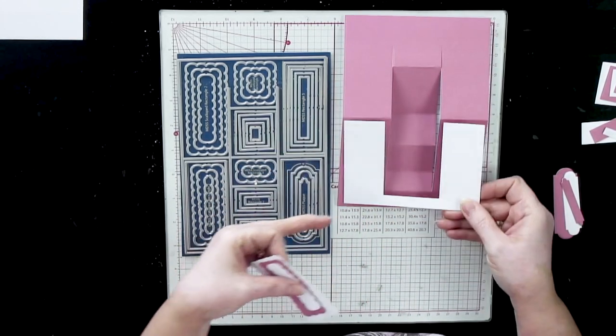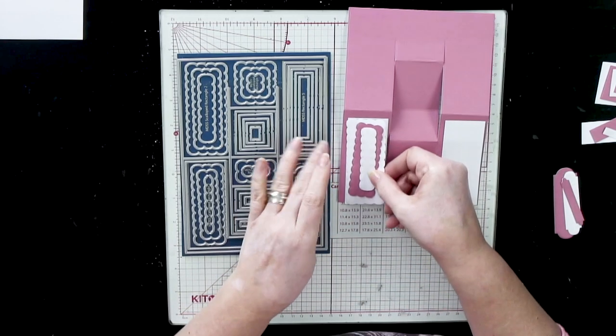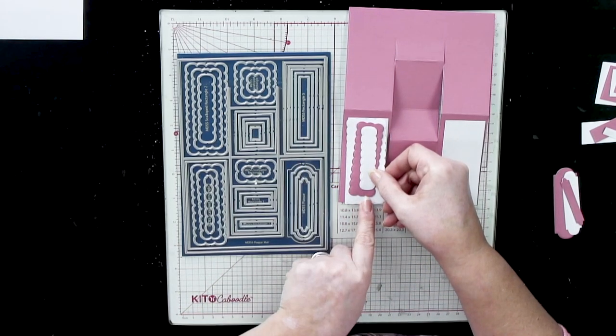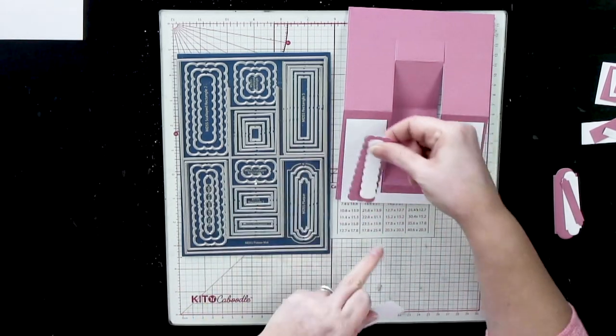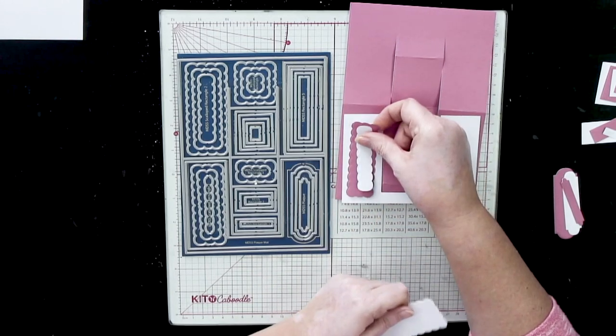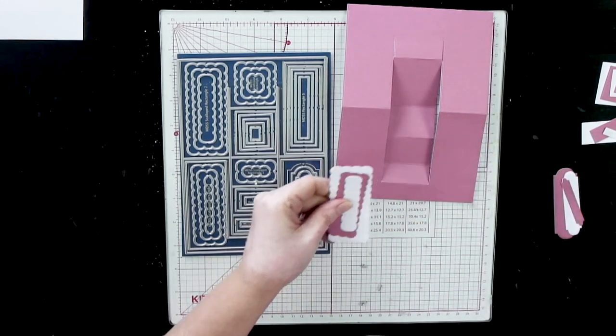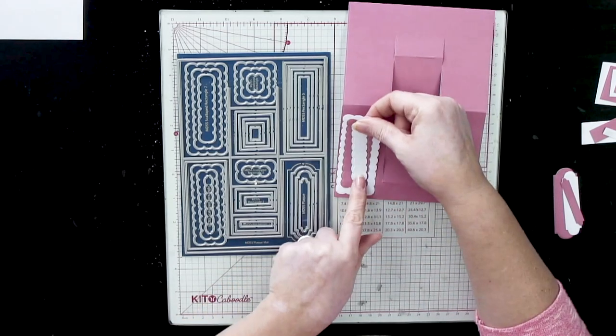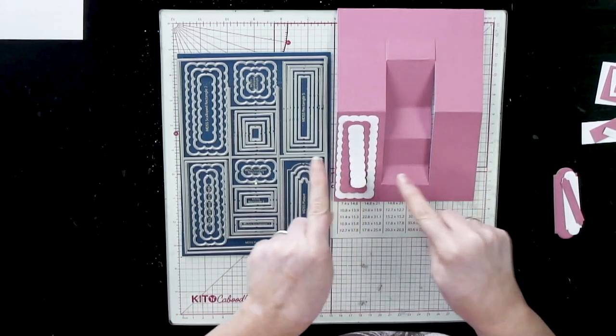The reason I've taken it away is if I pop that back on there, that mat layer is a bit big. Now you can just use those mat layers instead, but it gives you another alternative. So you would decorate both sides the same.